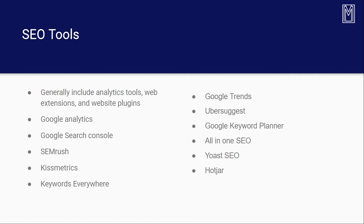SEMrush gives you SEO optimization for websites. It gives you an avenue to compare your website with other websites in the same niche — essentially letting you know what keywords they're ranking for, so you can figure out what to optimize on your own website, whether on-page or off-page. It gives you an in-depth analysis. Ahrefs, which isn't on this list, is also an analytics and optimization tool, and Moz at moz.com is also a good tool for that.